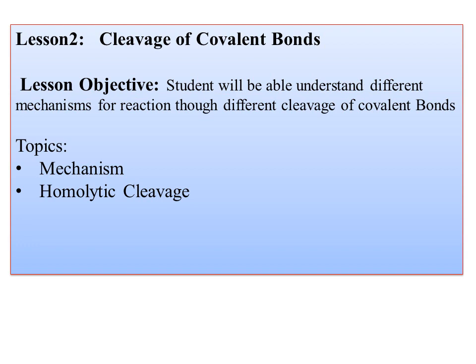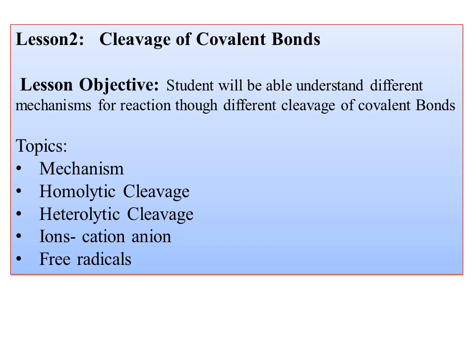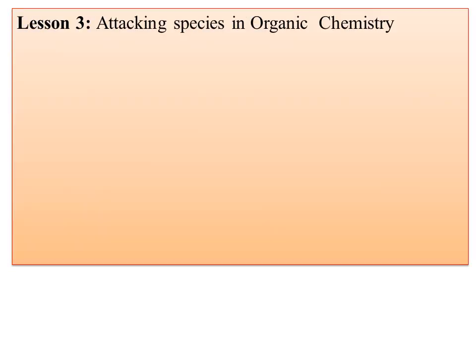The second lesson covers the cleavage of covalent bond. Cleavage of the covalent bond is the very first necessary step to understanding the mechanism. There are two different types: one is called homolytic cleavage and the other is called heterolytic cleavage. You also come across ions — cations, anions, and free radicals. Depending upon the different conditions, you come across different reactive intermediates, which are necessary and give us the path for the reaction mechanism.